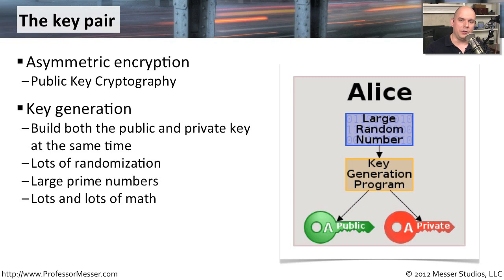You would create your public key and your private key at exactly the same time. They are cryptographically related to each other. When you build them out, you have the option to provide a lot of different types of randomization inside of the key. There are a lot of prime numbers used within the algorithms to create the key from the very beginning. Cryptography itself is literally a science unto itself, so there's a lot of math involved, but we don't have to worry about that — it's already part of the key creation process. We simply tell our PKI we'd like to create an asymmetric key pair, and it provides us with the public key and the private key combined to build out that particular key pair.